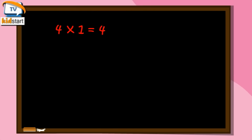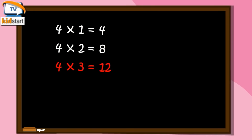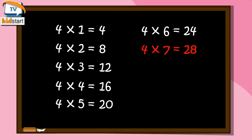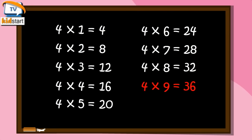4 ones are 4. 4 twos are 8. 4 threes are 12. 4 fours are 16. Four fives are twenty. Four sixes are twenty-four. Four sevens are twenty-eight. Four eights are thirty-two. Four nines are thirty-six. Four tens are forty.